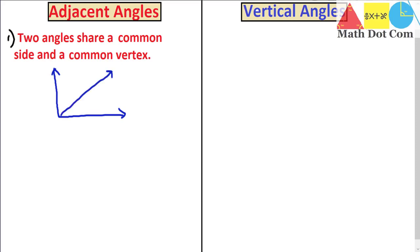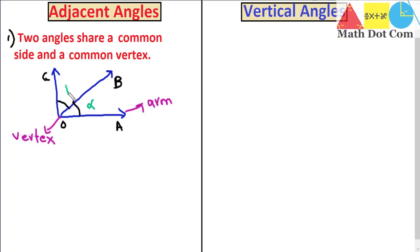Let's say this is A, this is O, B, and C. Point O is the vertex and these lines are the arms — the blue line and this other line are both arms. This angle is angle alpha and this angle is angle beta. Angle alpha and angle beta are two angles that share a common side, or arm. They are sharing a common arm that is OB, and the vertex O is also common.